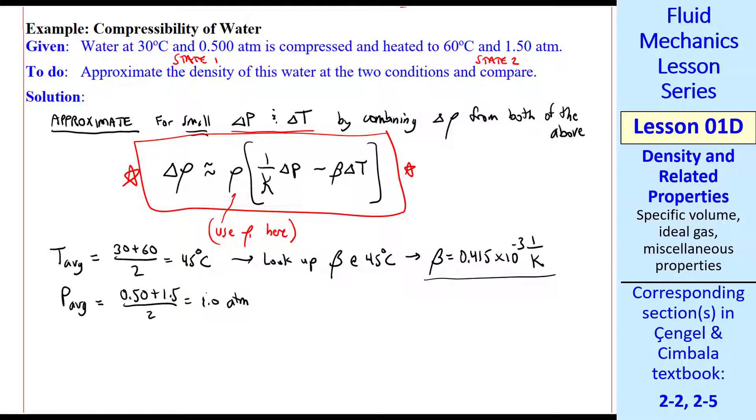The average pressure similarly is 1.0 atmosphere. Again, it's a little easier to find alpha, which as you recall, alpha is just 1 over kappa. These are not in the Cengel and Cimbala textbook. You have to look online. I found alpha as 4.48 times 10 to the minus 5, 1 over atmosphere, at 1 atmosphere and 45 degrees C. Alpha actually depends on both pressure and temperature for liquids.